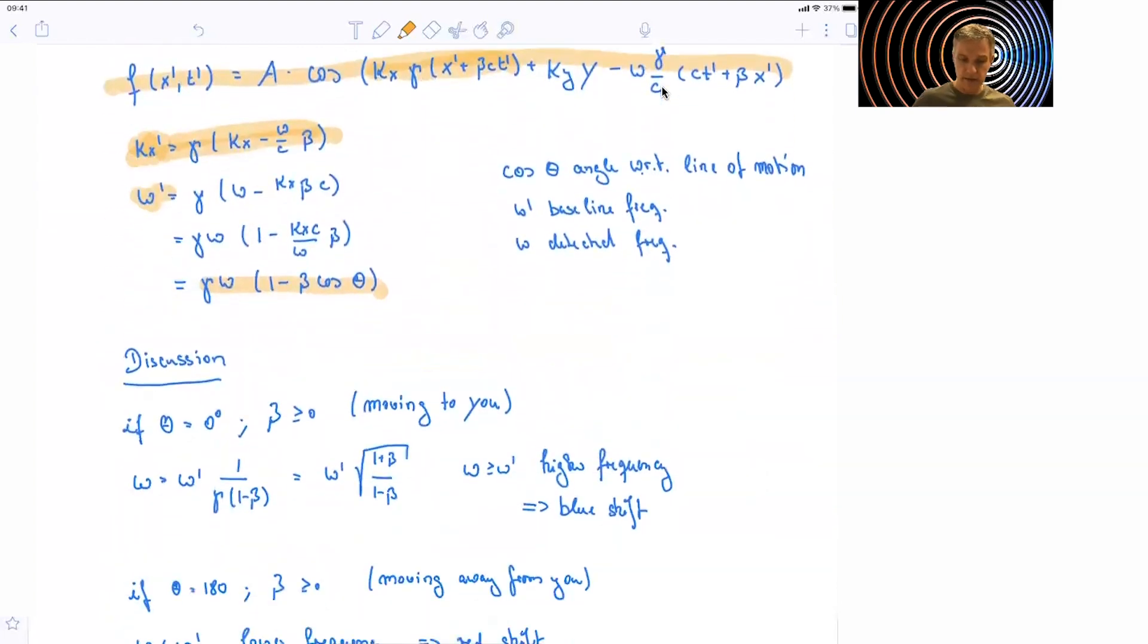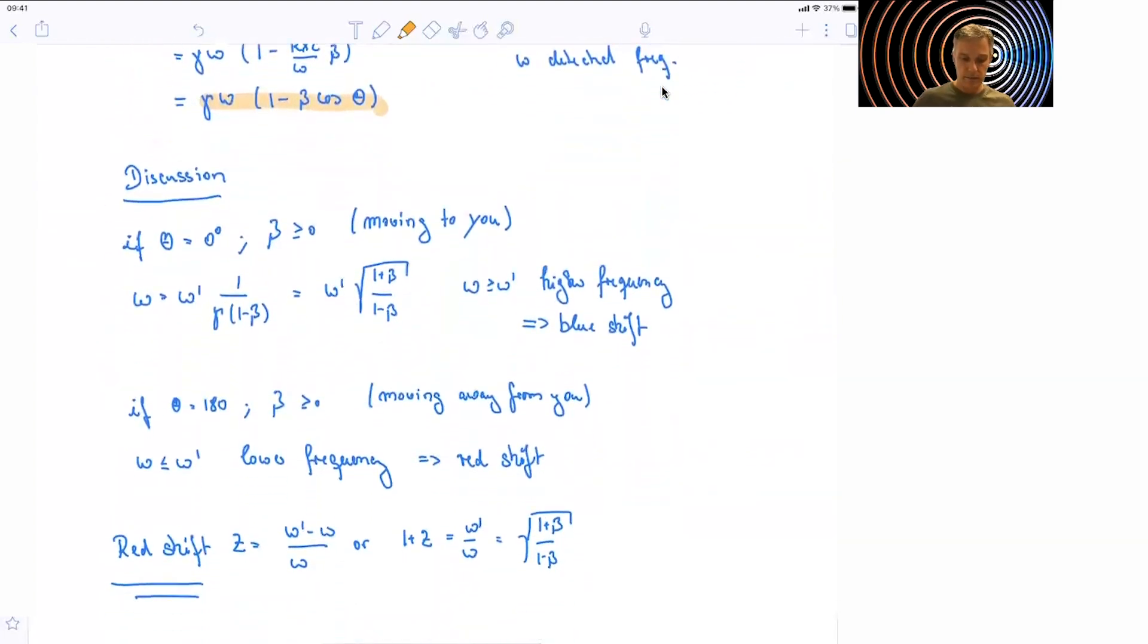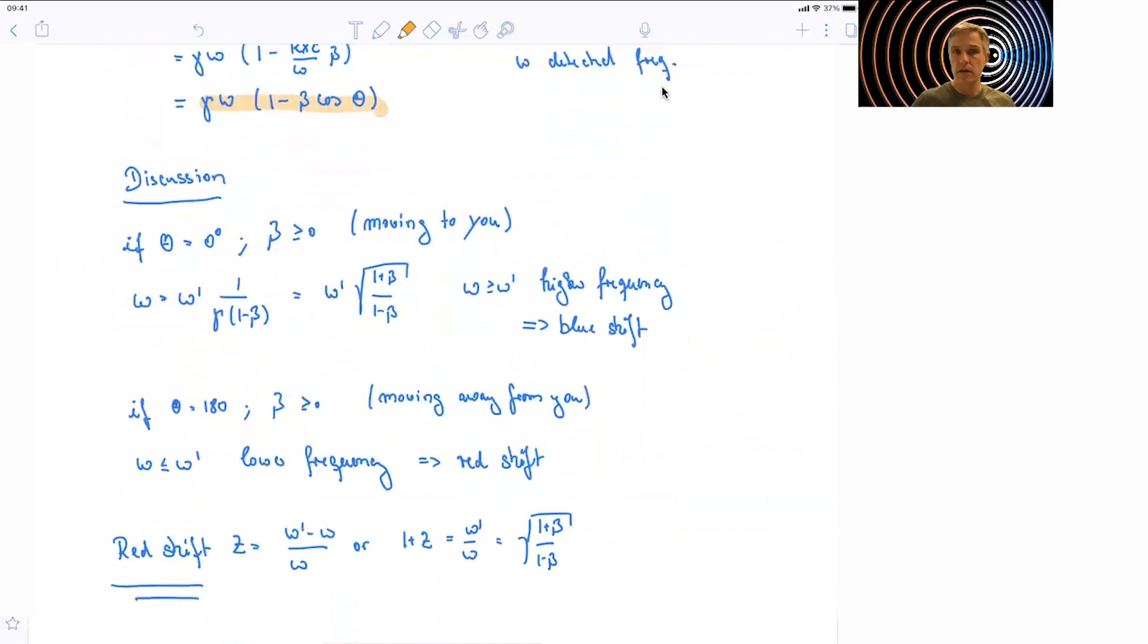So as part of the discussion, we can look at the specific case where the wave is moving towards us. Theta equals 0, and beta is positive. In this case, omega is larger than omega prime. And so the frequency is going to be higher. The detected frequency is going to be higher, blue shifted.